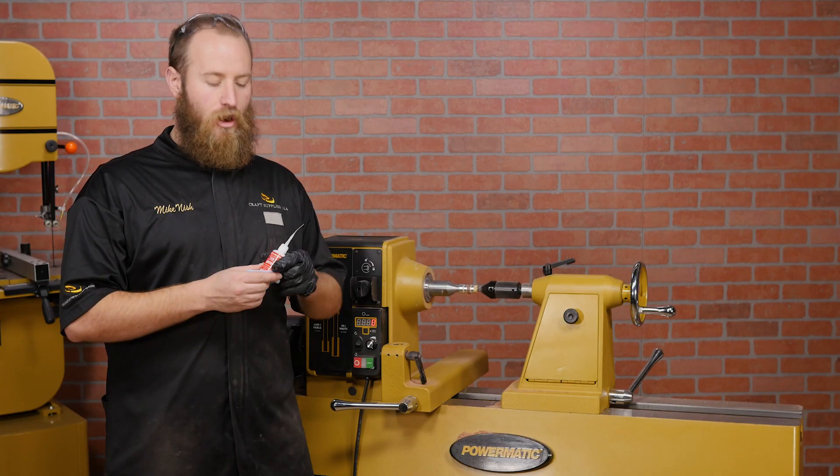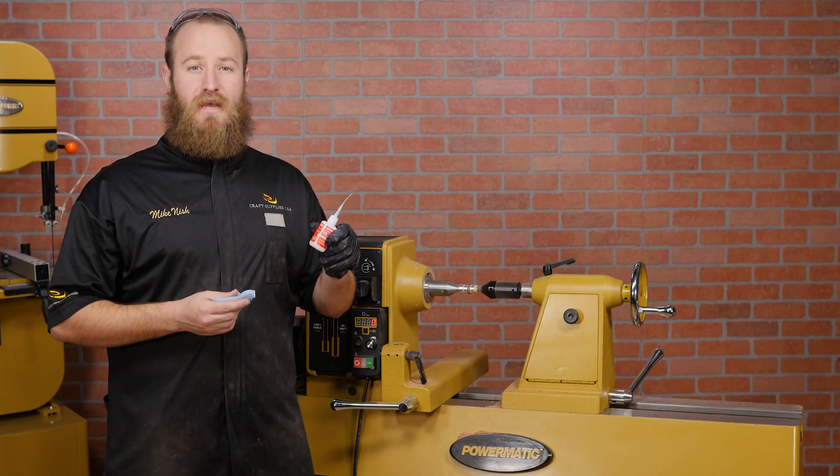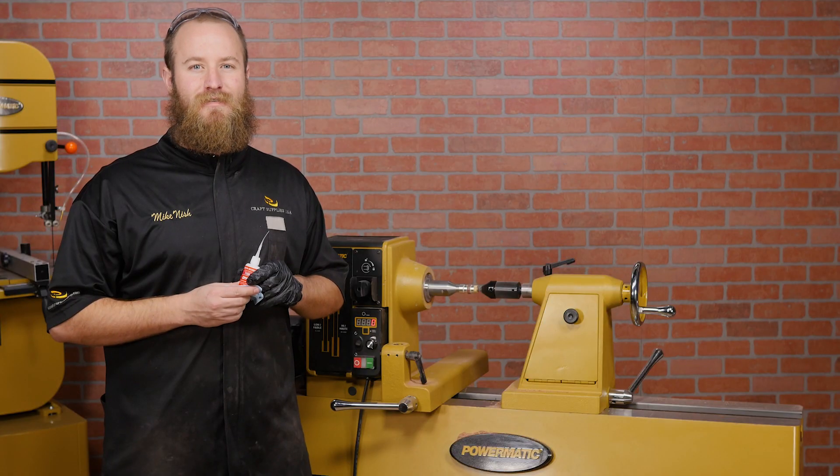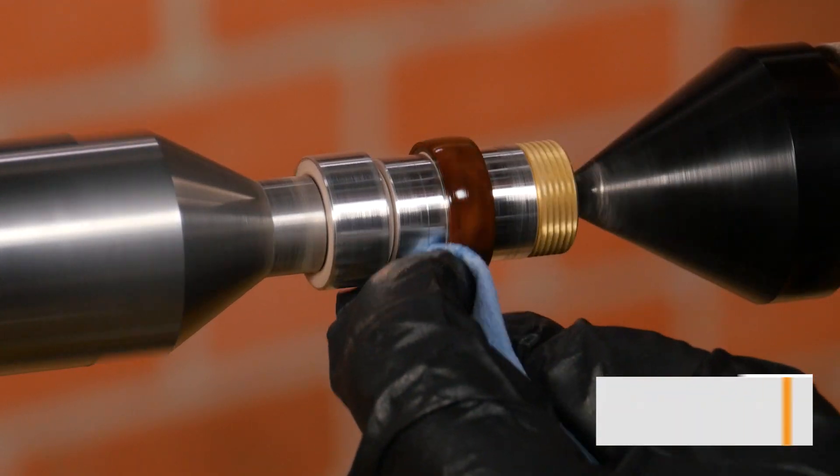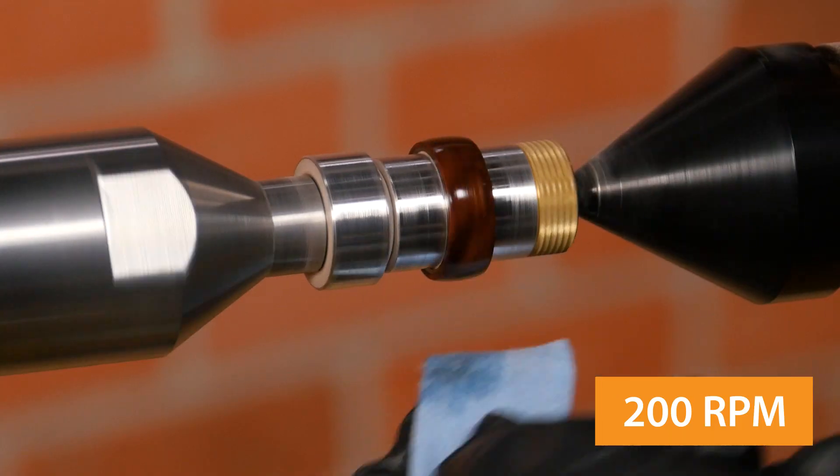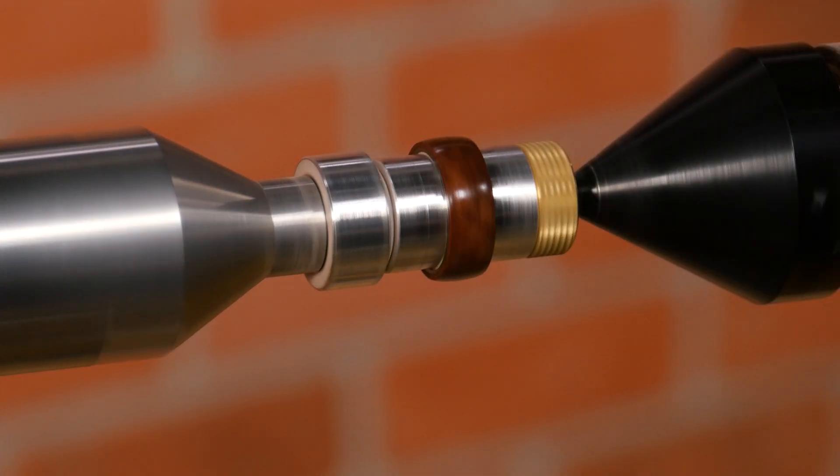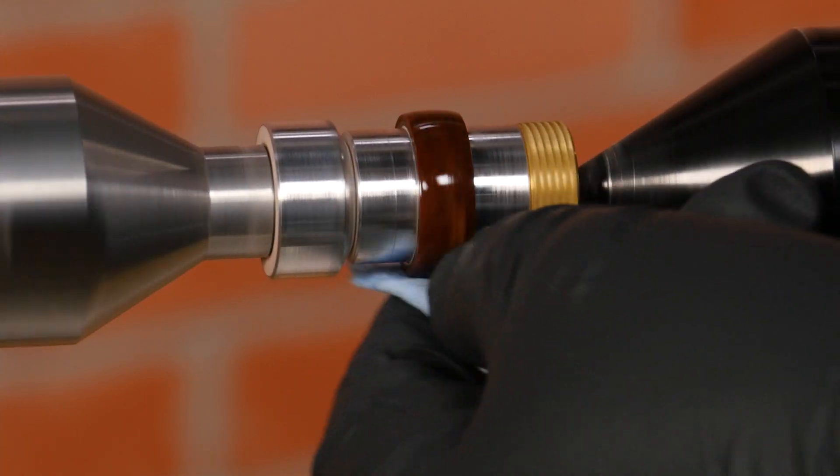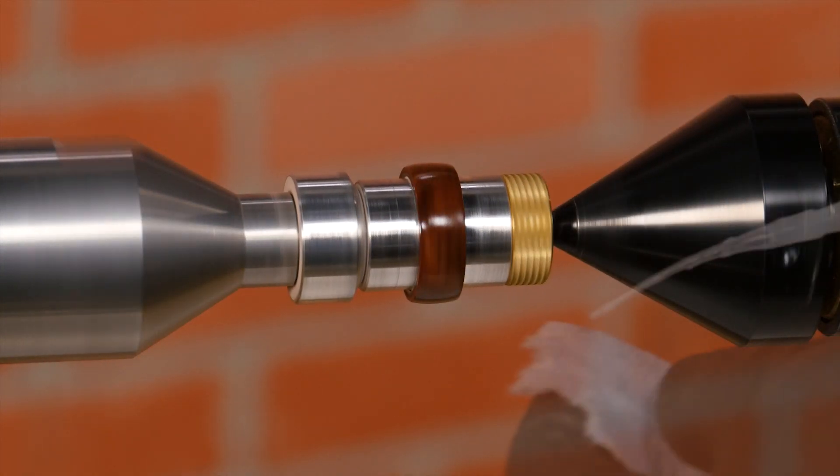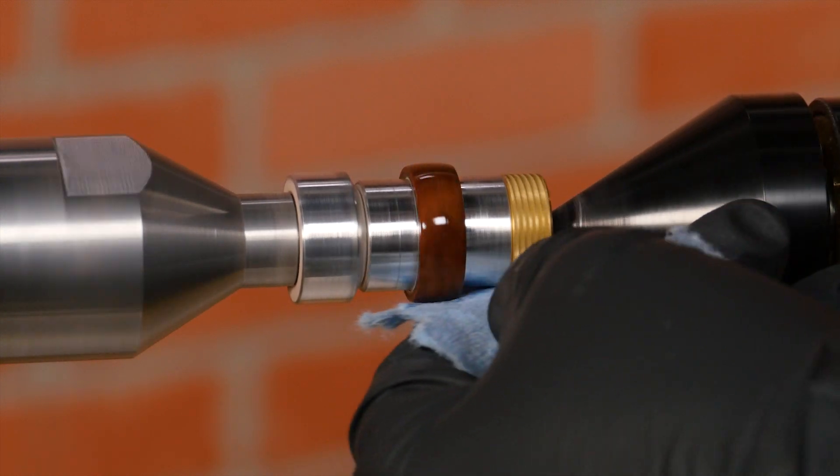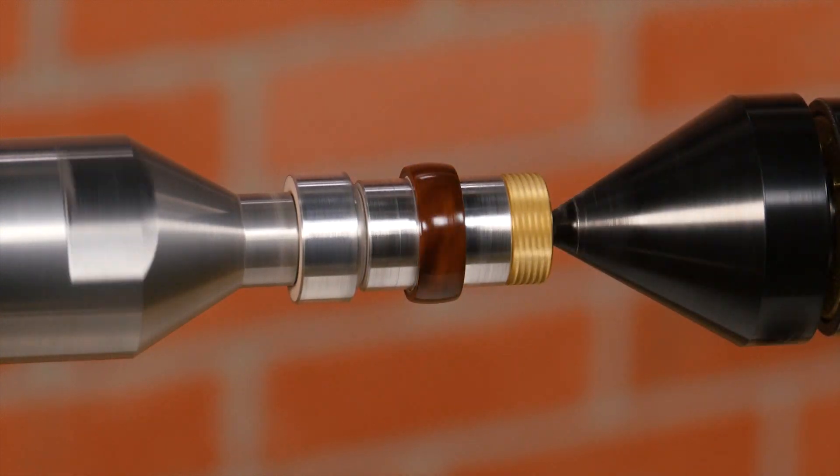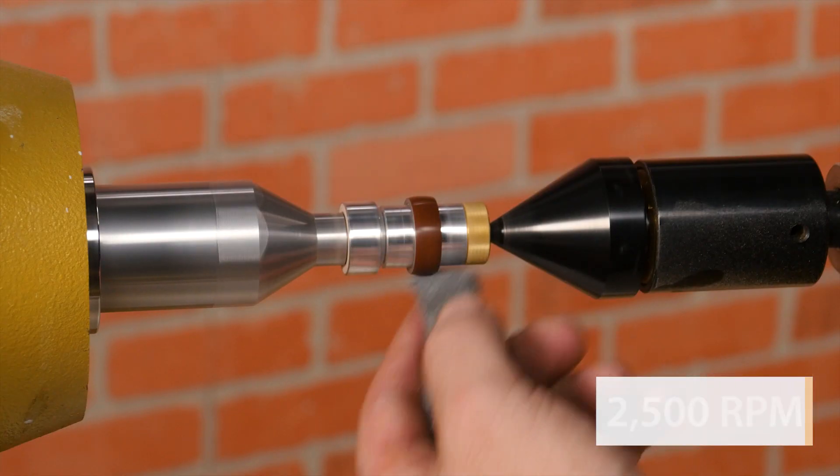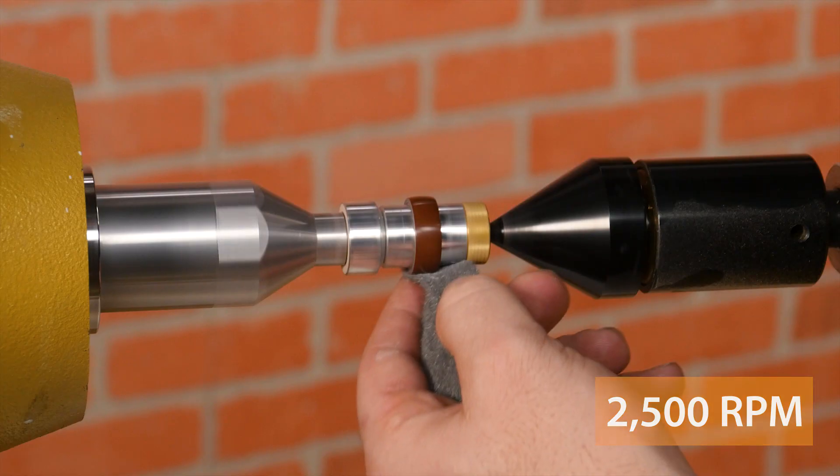Now it's time to finish the blank. I'll be using a CA finish and I'll be covering the basics here, but if you want a more in-depth video, check the description below. With the lathe running at around 200 RPM, drip some thin CA on a piece of paper towel and smooth it out, then spray with activator. Repeat this process and apply 8 to 10 coats. Now smooth out any inconsistencies in your finish with some steel wool, then polish the blank with Micromagic to finish the ring.